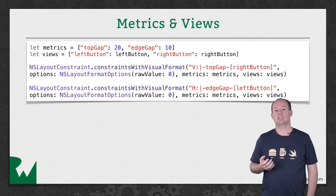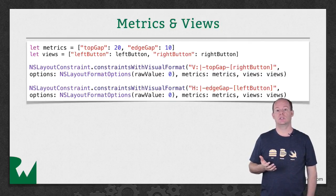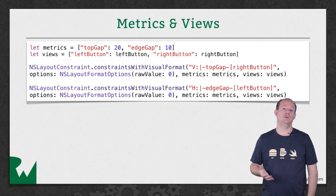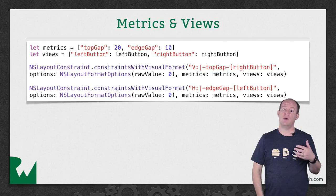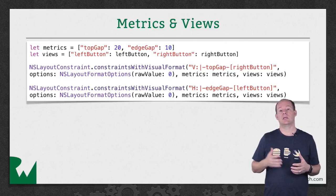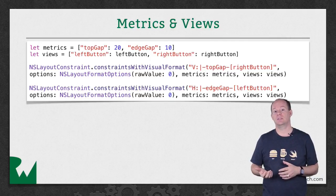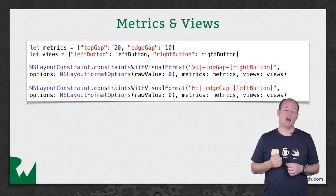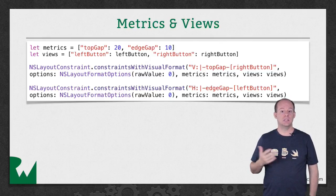In the case of metrics, this lets you use descriptive words like topgap instead of magic numbers in your string. The metrics parameter can be nil if you don't have any values to use in the string, but the views dictionary is how the method knows what you're calling each view. Even if you're using strings that match the views variable names, the visual format parser still needs to know that name. The return value of constraints with visual format is an array of NSLayoutConstraints, so this is a good place to use activate constraints since it takes an array.